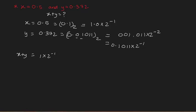Now let's add X plus Y. We have 1.0 × 2^(-1) plus 0.1011 × 2^(-1). We take 2^(-1) as a common factor, so we get (1 + 0.1011) × 2^(-1), which gives us 1.1011 × 2^(-1).